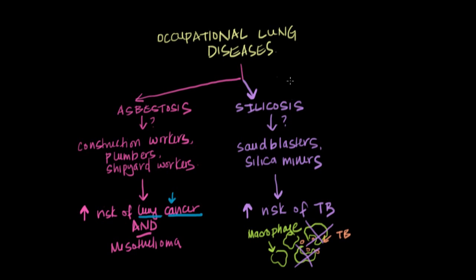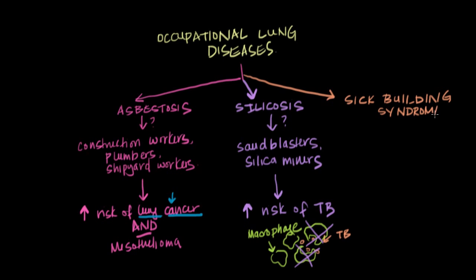The third type of occupational lung disease is sick building syndrome. This is usually seen when there are AC or heating ventilation problems, and also when people are exposed to different molds found in older or unkempt buildings.